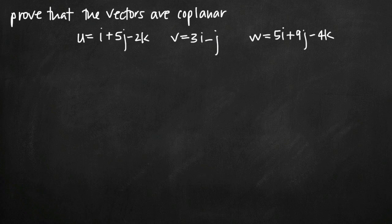Today we're going to be talking about how to prove that three vectors are coplanar. In this particular problem, we've been given three vectors: u, v, and w. We need to prove that these three vectors are coplanar. Remember that coplanar means that all three of the vectors lie within the same plane.